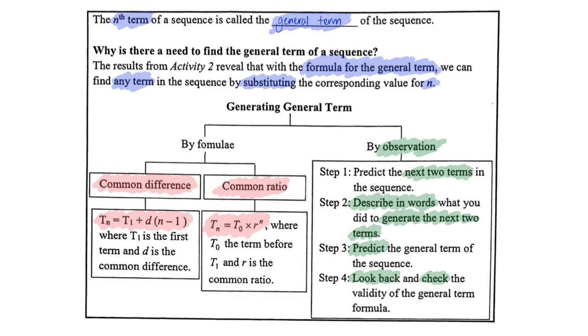And r is the common ratio, meaning the number that we multiplied by to the previous term.